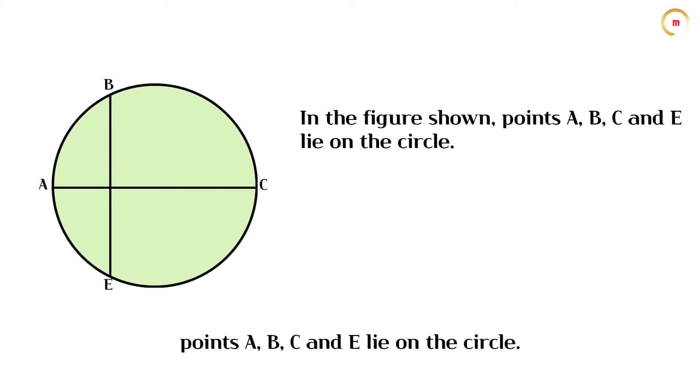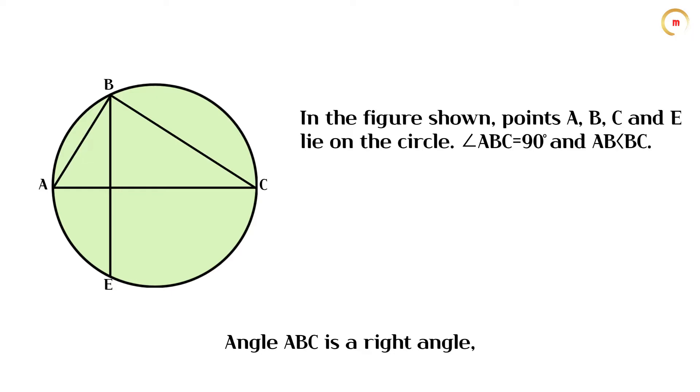In the figure shown, points A, B, C, and E lie on the circle. Angle ABC is a right angle.